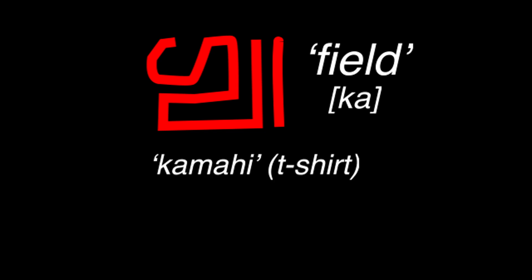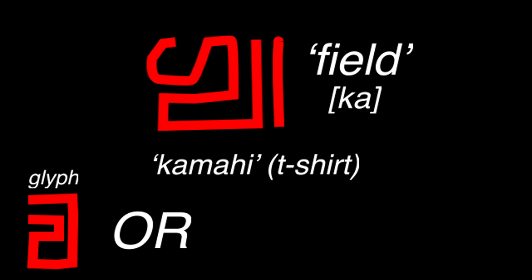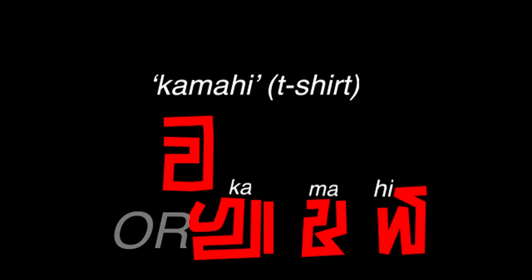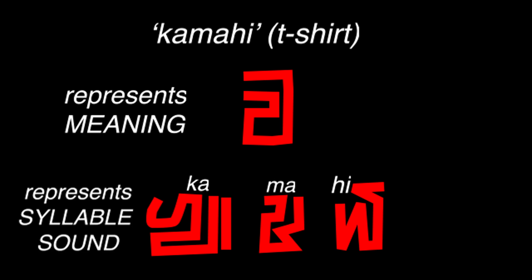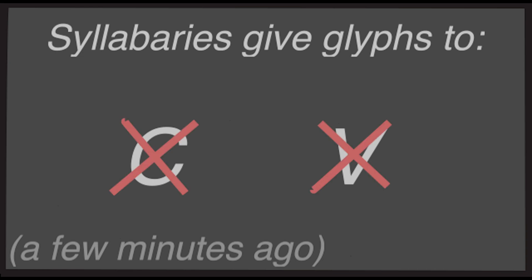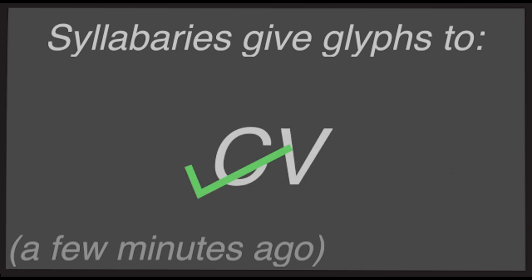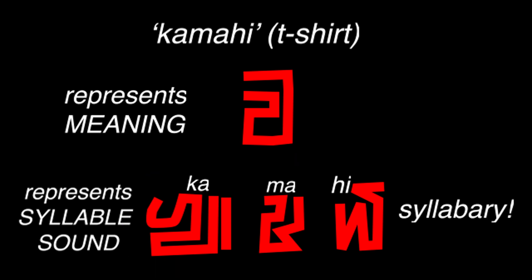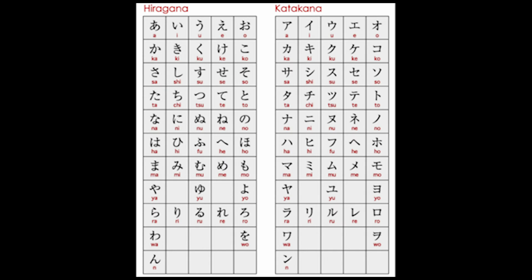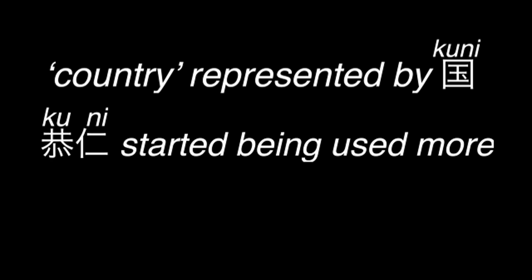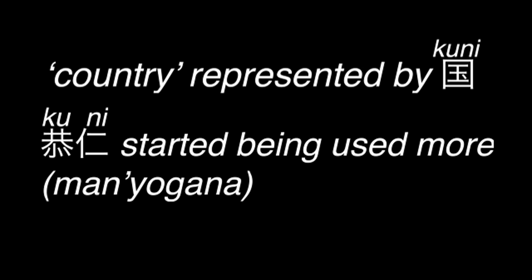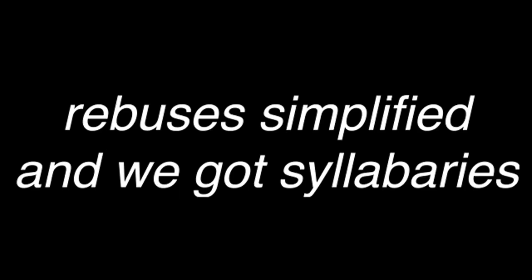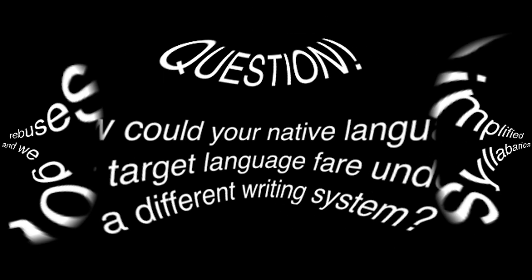If a character meaning 'field' makes the sound 'ka', a longer word like 'kamahi' meaning 't-shirt' could be written with its logograph or with the rebuses 'ka', 'ma', and 'hi' — transcribing syllables. If that latter system is used more frequently, a syllabary begins to form. This is exactly how the Japanese scripts hiragana and katakana developed: originally all logographic Chinese, the characters started being used for phonetic value in a system called manyogana, eventually simplifying into the two scripts Japanese uses today.